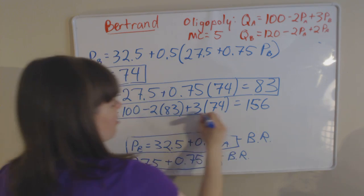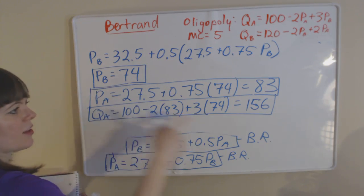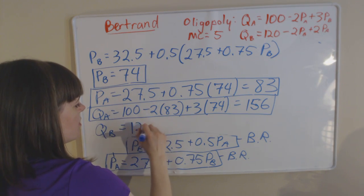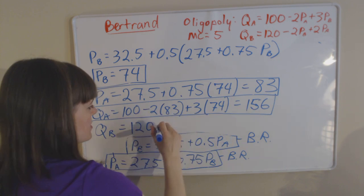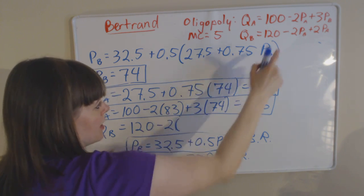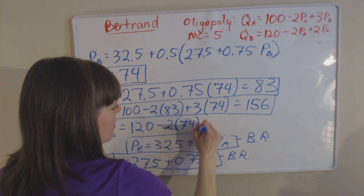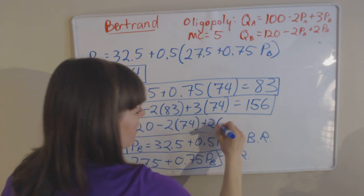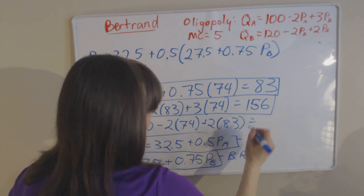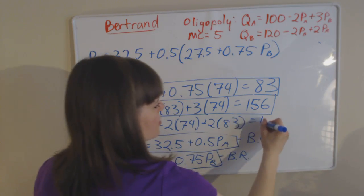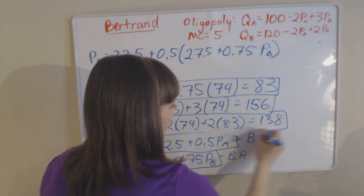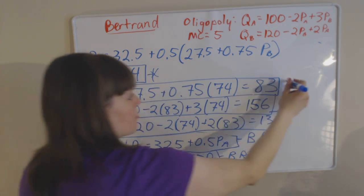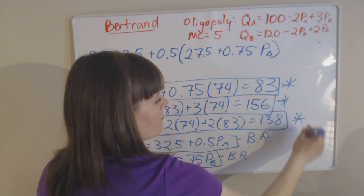We now have three of our four things we need — the price of both firms and the quantity of firm A. The last thing is the quantity of firm B, which comes from plugging those prices into firm B's demand function: 2 times PB (74) plus 2 times PA (83). When we plug that in, we find that the quantity firm B will produce is 138. So we've fully solved our problem, finding the price and quantity for both firms.